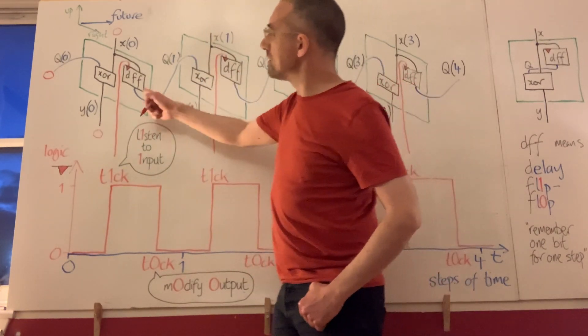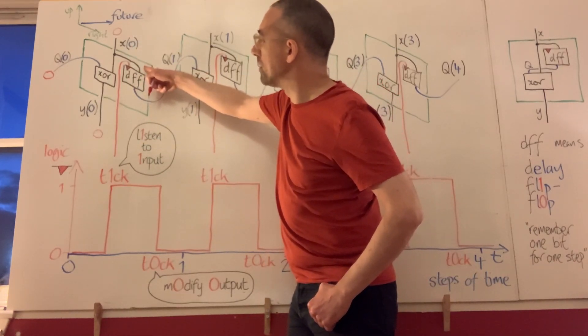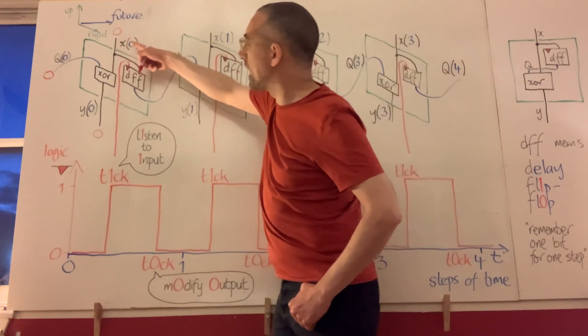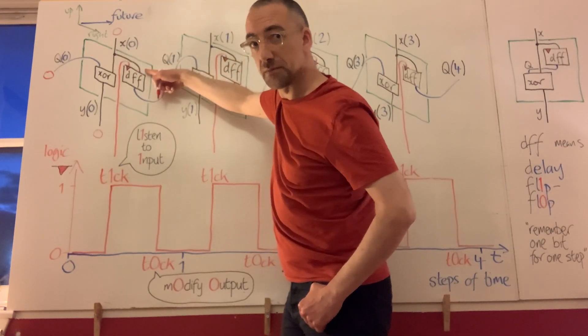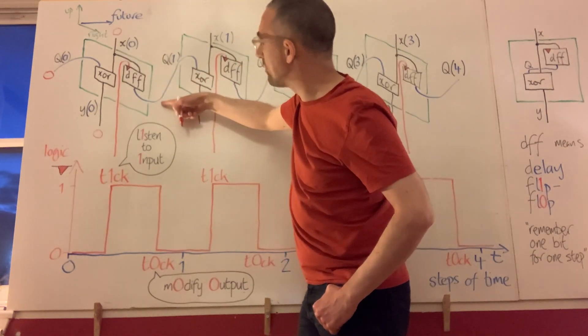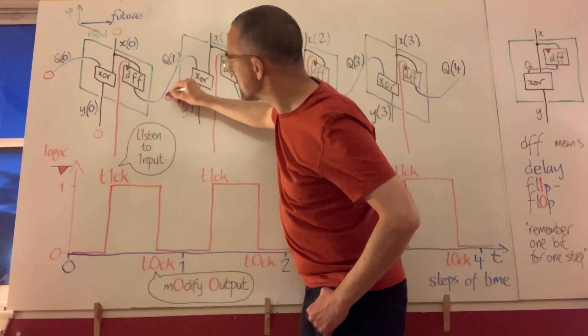But we also know that when the tick happens, the D flip-flop will recognize that its input is a copy of that 0. So when the tock happens, that 0 will be sent to the output.